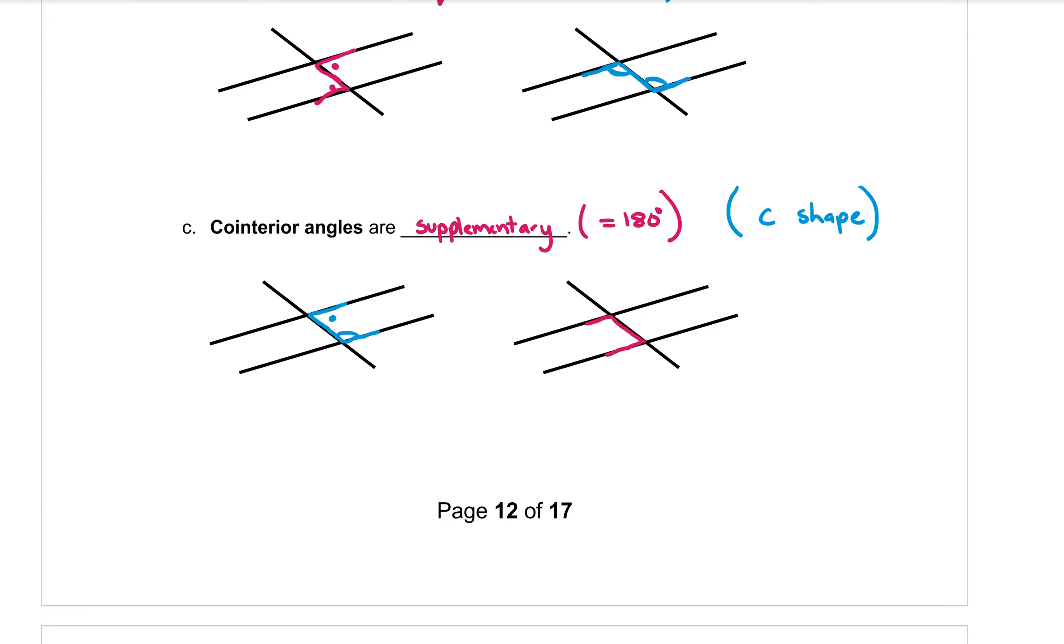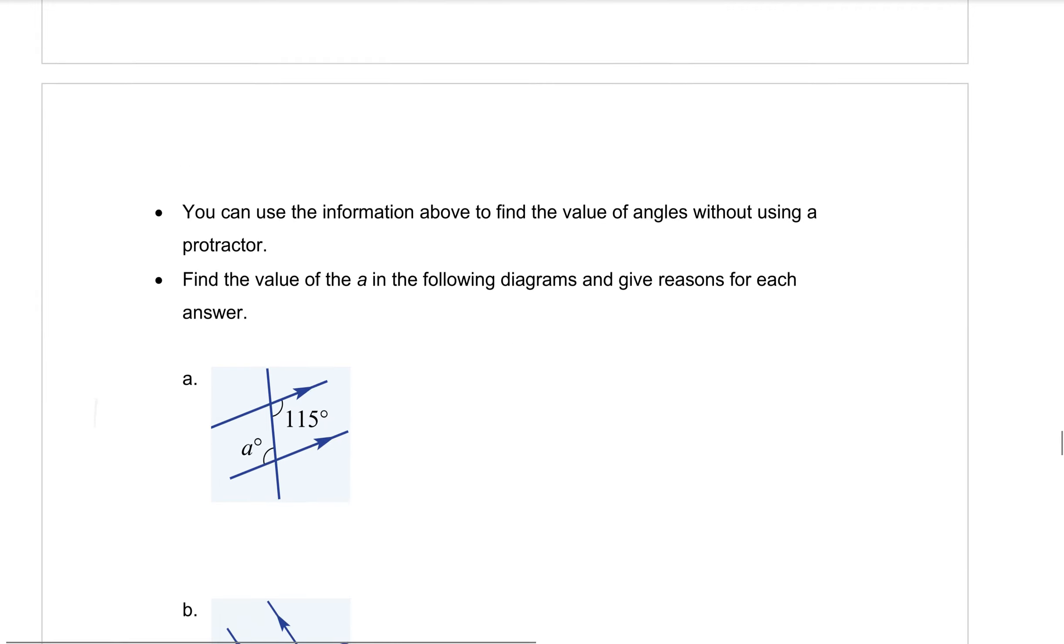Or I could have a backwards C here like this. And let's do some different markings for these ones. Maybe we'll do some arcs like that and across. Those two angles would be co-interior making the backwards C shape. Okay, so hopefully that will help you identify them.